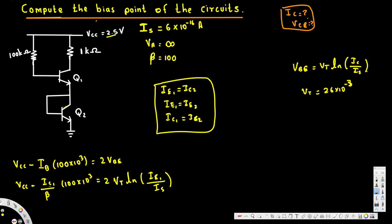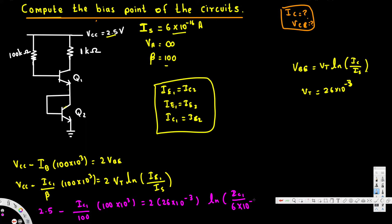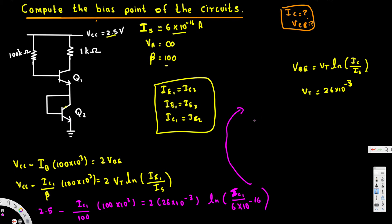We know VCC = 2.5V, β = 100, VT = 26×10⁻³ V, and IS = 6×10⁻¹⁶ A. Plugging in all values: 2.5 minus (IC1/100) times 100×10³ equals 2 times 26×10⁻³ times ln(IC1 / 6×10⁻¹⁶). From this equation we can solve for IC1.